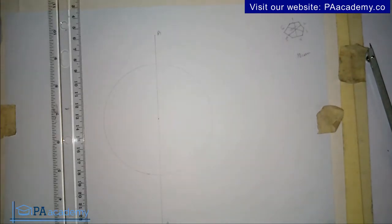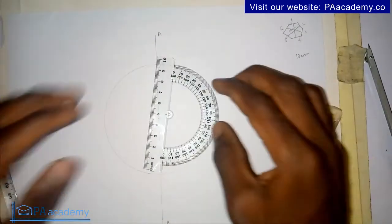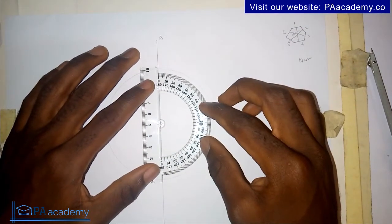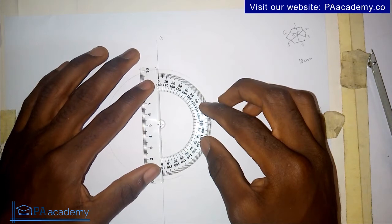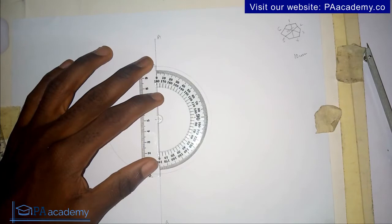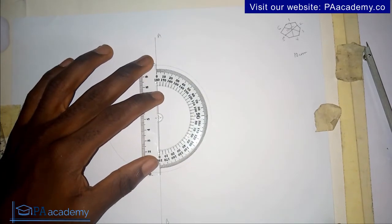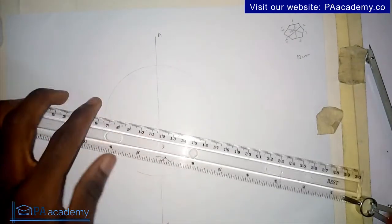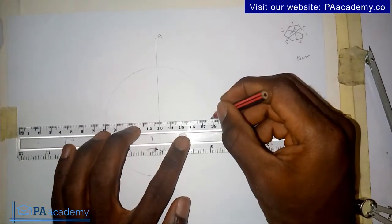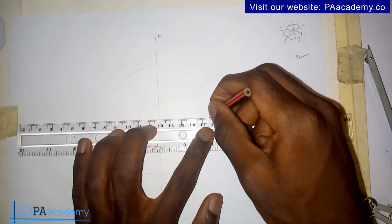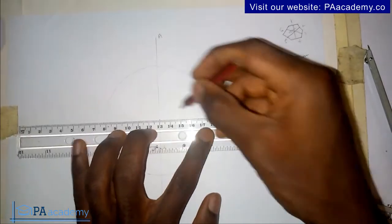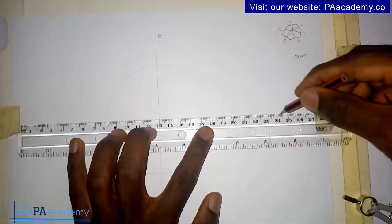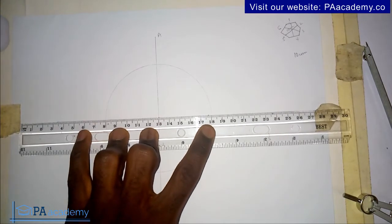Now I'll bring my protractor because I want to draw another line that is perpendicular to line AB. I'll use my protractor to do that. I'll note the point at 90 degrees, and with that I can draw a perpendicular line.